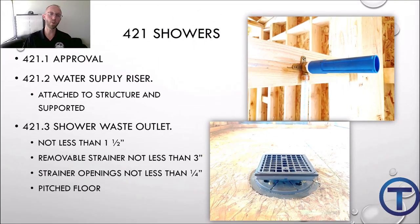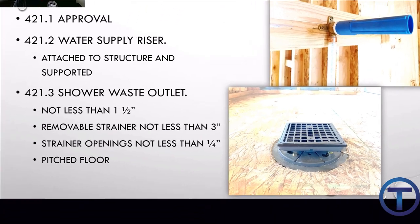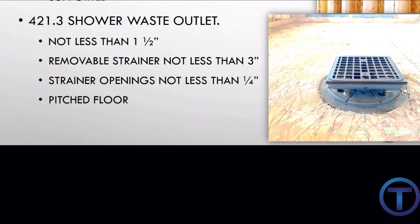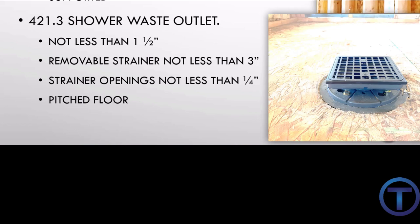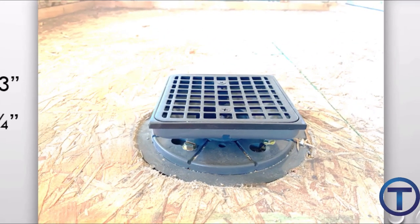4.21.3 goes over the shower waste outlet — that's the drain, minimum size one and a half inch. Most of the time when installing a shower drain it'll have a two inch connection, which is typical. A bathtub only has one and a half inch and we use that for a shower too, so one and a half inch is the minimum. Showers have to have a removable strainer not less than three inches in diameter, with openings not less than a quarter inch — so shower drain strainers are very specific in their requirements. Of course the floor has to be pitched or sloped to the floor drain.